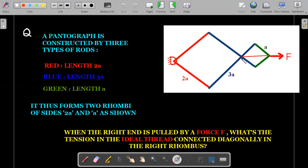Can you see there is a 2a rhombus here, and another rhombus of side a here. When the right end is pulled by a force F, what's the tension in the ideal thread connected diagonally in the right side rhombus? So you need to find the tension in this thread in terms of the applied force F.